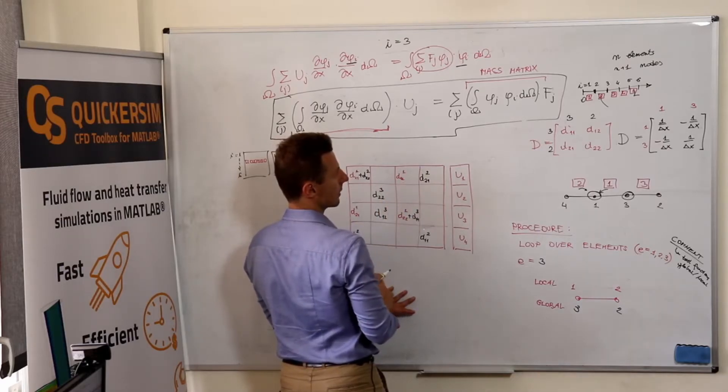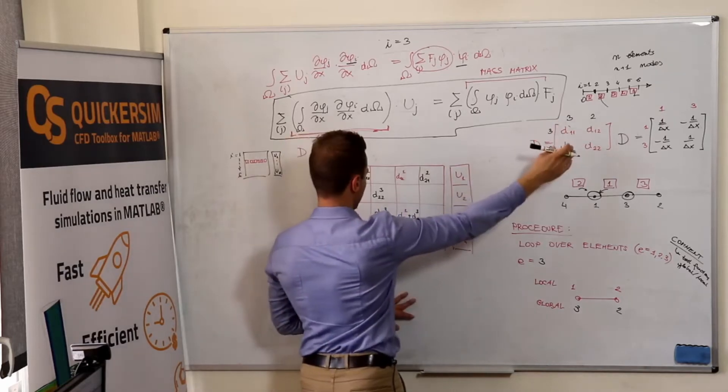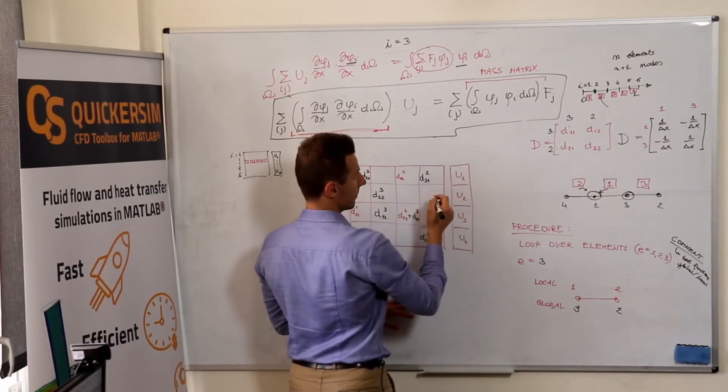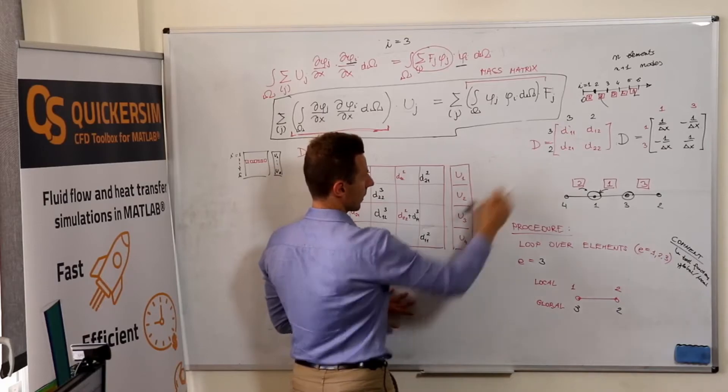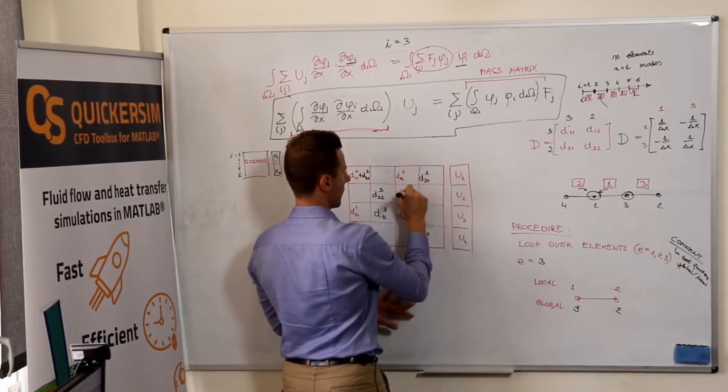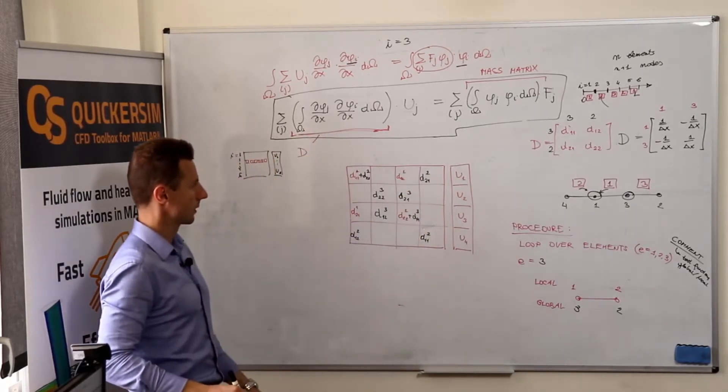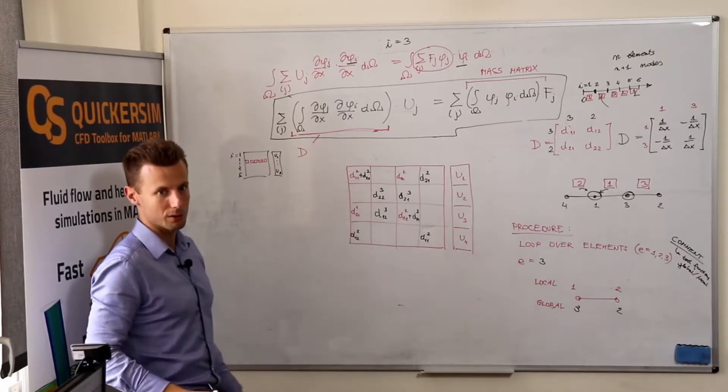And column three. Column three, second row. So, D two-one of the third element. And we are done.